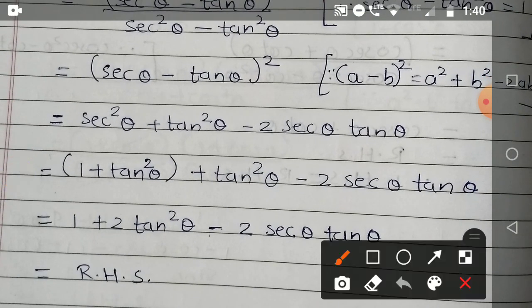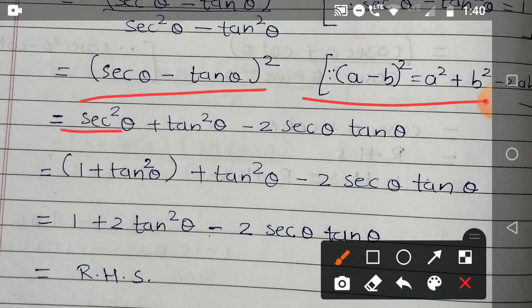Now we have this identity: (a - b)² = a² + b² - 2ab. So we will apply that formula here. So a² which means sec²θ, b is tan, so tan²θ, minus 2ab, minus 2 sec θ tan θ.